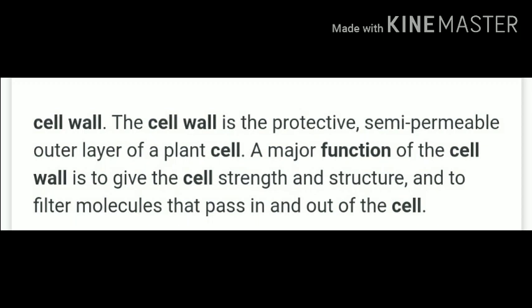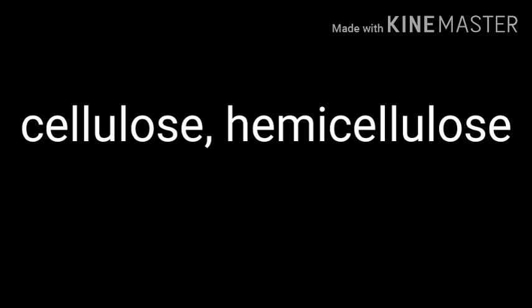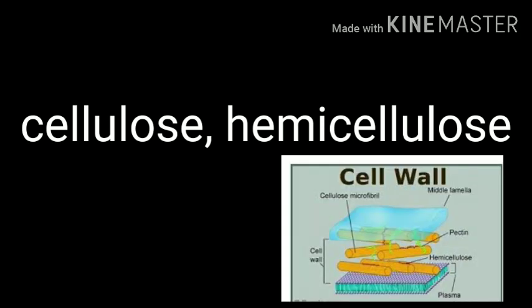Which kinds of organisms have a cell wall? The main kinds of organisms that have cell walls are plants, fungi and certain prokaryotes and bacteria. In plants, cell walls are mainly comprised of complex polysaccharides. These polysaccharides are sugar-based polymers, and these kinds of polysaccharides are cellulose, hemicellulose, etc. All the plant cells have a rigid cellulose layer outside the cell membrane, and that is called a cell wall.